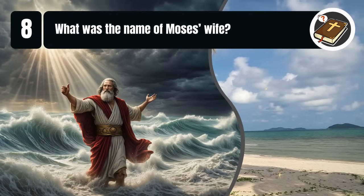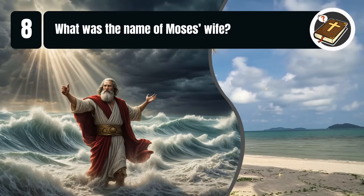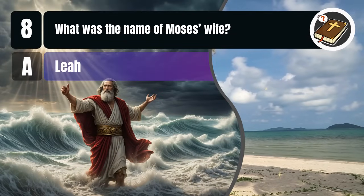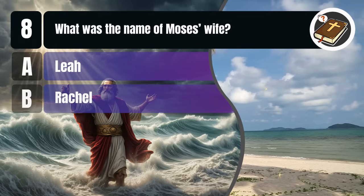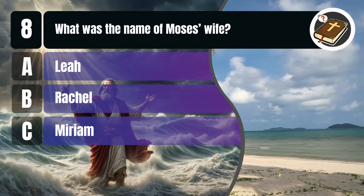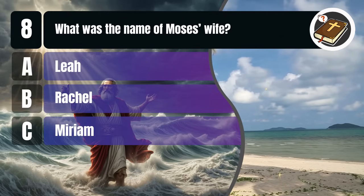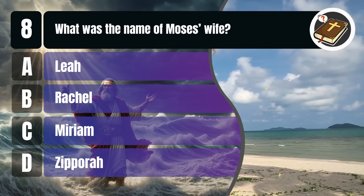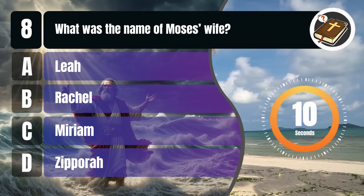Question 8. What was the name of Moses' wife? A. Leah, B. Rachel, C. Miriam, D. Zipporah. You get 10 seconds.